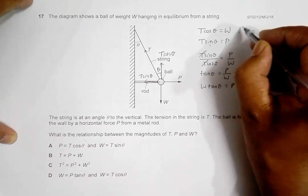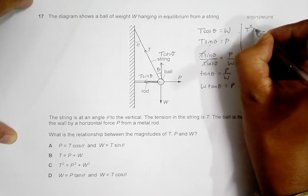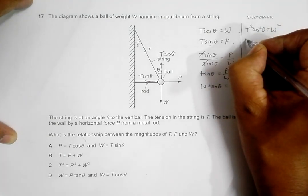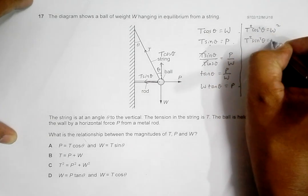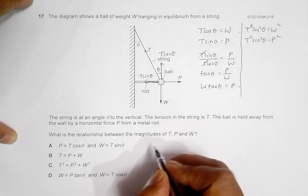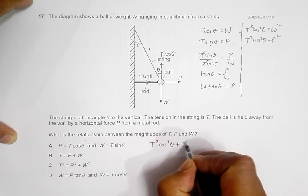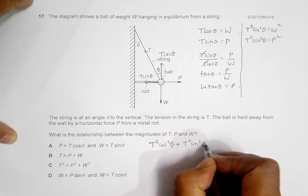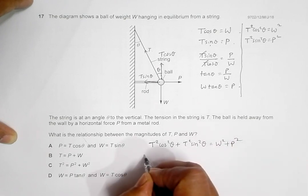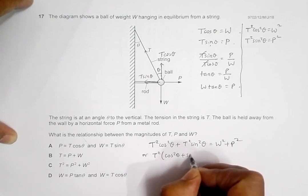Now what we do is square this thing and this thing. So it gives us T² cos² theta equals W² and T² sin² theta equals P². If I add both of these things, I will have T² cos² theta plus T² sin² theta equals W² plus P².